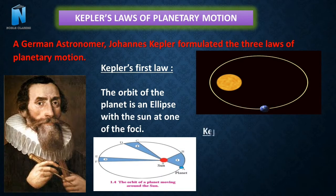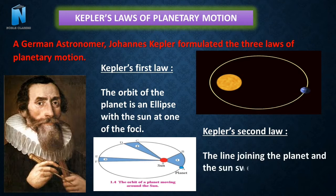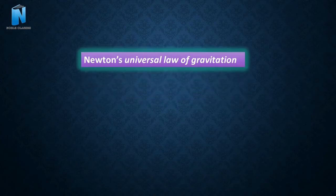If a planet moves from A to B and C to D in equal time interval, then the area A as B and C as D will be equal. That becomes the second law that is the line joining the planet and the sun sweeps equal area in equal interval of time.